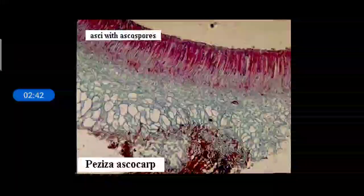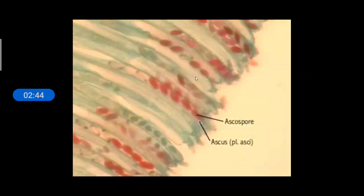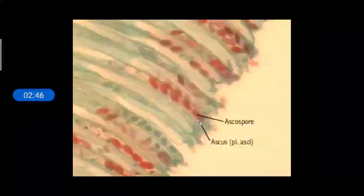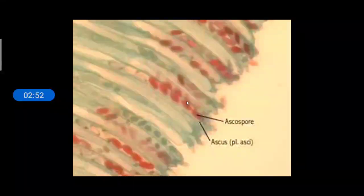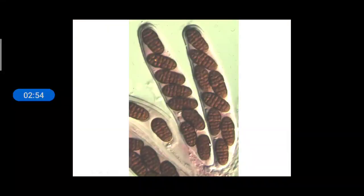So this Ascus is present, it is the sac. That is why this group is called Ascomycetes. This is the sac. And now we can count the number of Ascospores. Ascospores, one, two, three, four, five, six, seven, eight. So eight Ascospores are there in one Ascus.